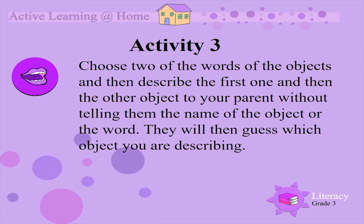Activity 3. Choose two of the words and objects, then describe the first one to your parent without telling them the name of the object or the word. They will then guess which object you are describing. Then do the same thing with the second word.